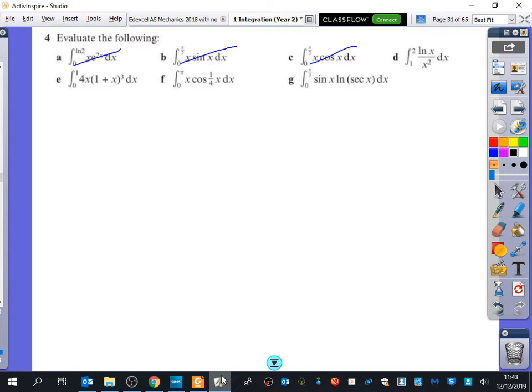We're going to have a look at one with a tricky bit of limits here. So we're going to look at g. We've been asked to integrate between 0 and π over 3, sine x ln sec x dx.